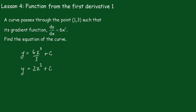Now when x equals 1, y equals 3. So we see that 3 equals 2 times 1 cubed plus c. So c must equal 1. So the equation of the curve is y equals 2x cubed plus 1.